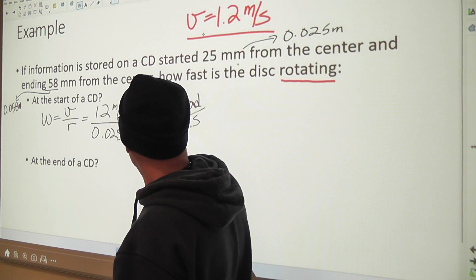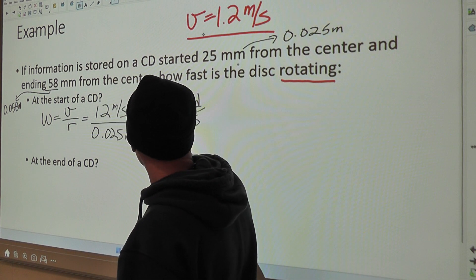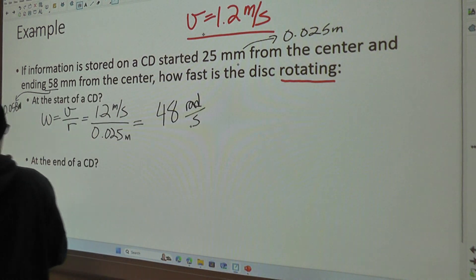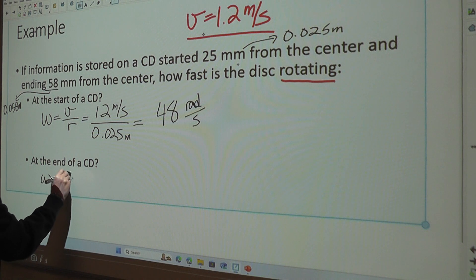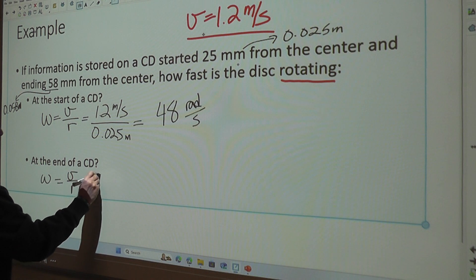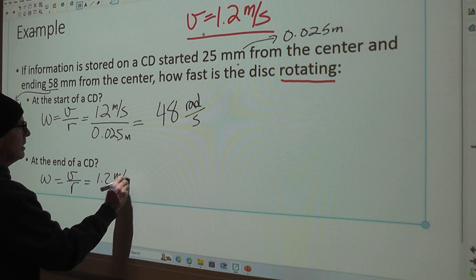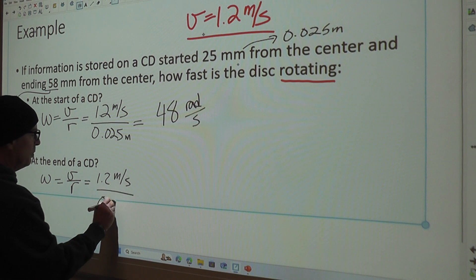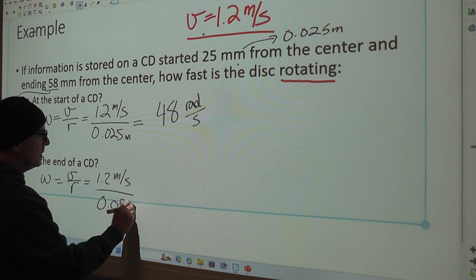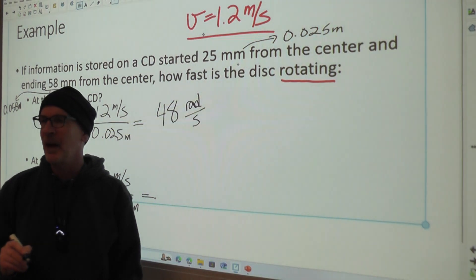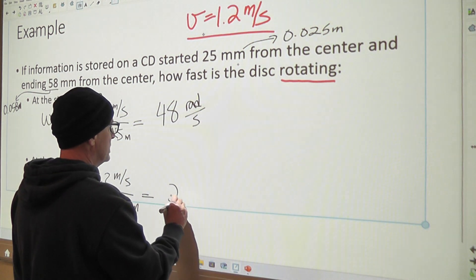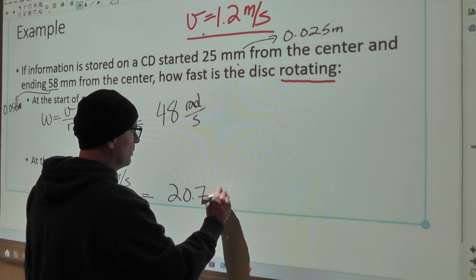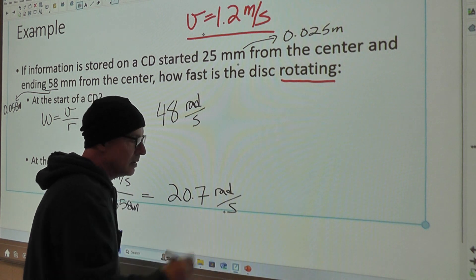So this is going to be our starting velocity, and at the end, our angular velocity is going to be 1.2 meters per second divided by 0.058 meters, which ends up being, I already forget, is it 20.7? Okay, 20.7 radians per second.